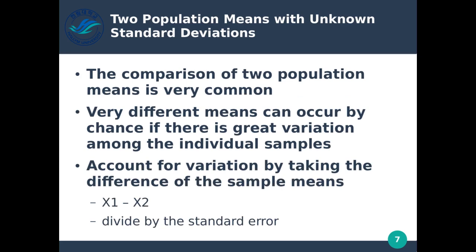For the population means with unknown standard deviations, the comparison of two population means is very common. Very different means can occur by chance if there's great variation among individual samples, which essentially raises our error rate or lowers our confidence level. We account for variation by taking the difference of the sample means — x1 minus x2 — divided by the standard error. If we have high variation in our samples, it becomes very difficult to predict what the next value is going to be.